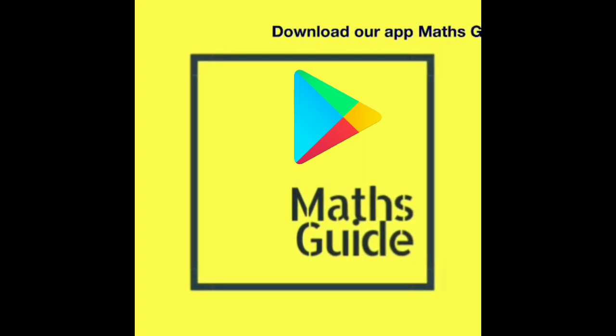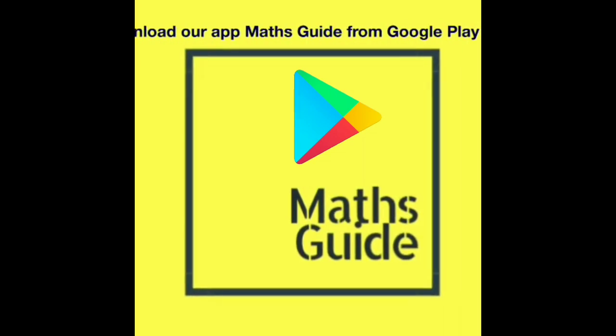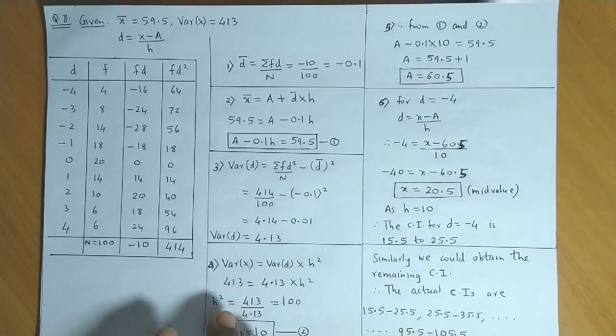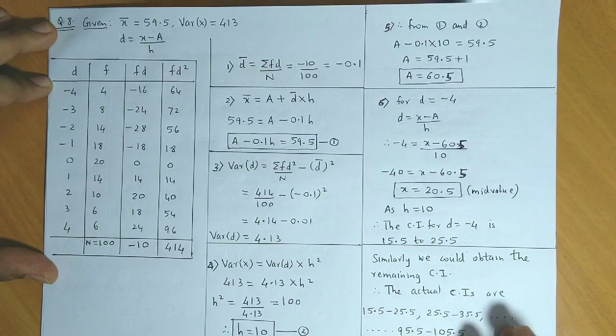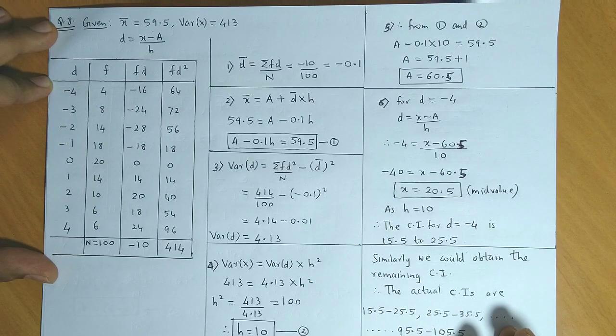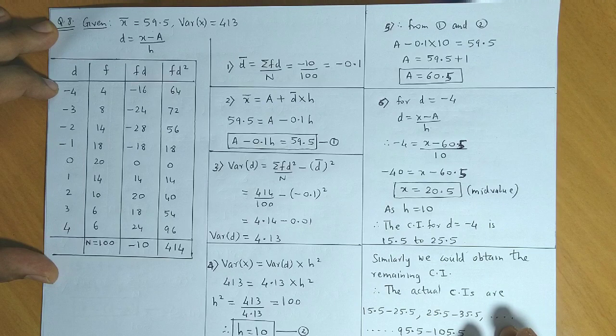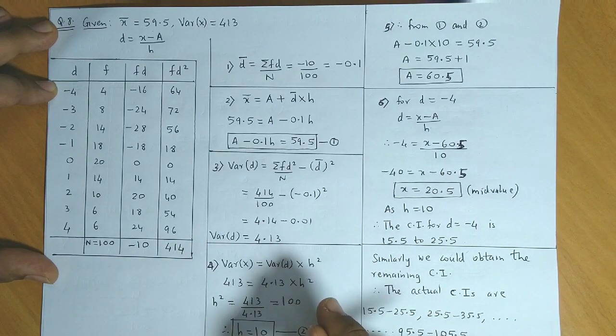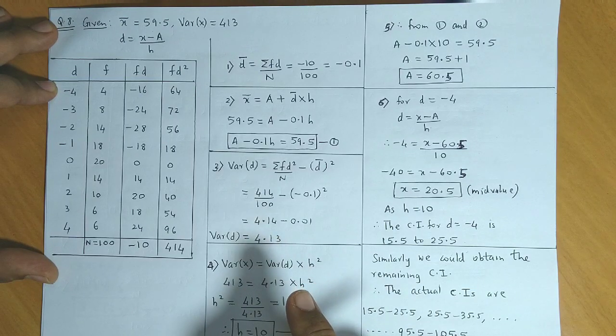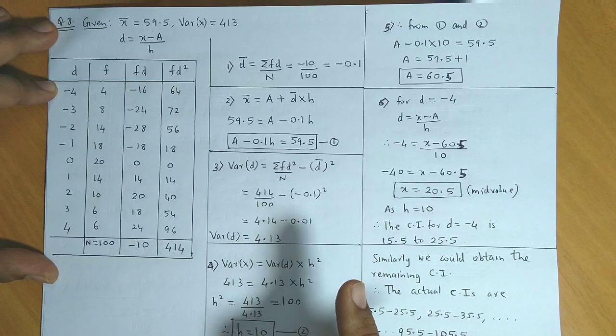Download the app Maths Guide from Google Play. Today we discuss question number 8. The question states: the following distribution was obtained by change of origin and scale of variable x.